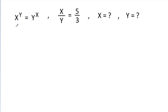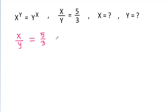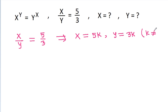In this video we have given x power y is equal to y power x, and x by y is equal to 5 by 3. We have to find the value of x and y. Since x by y is equal to 5 by 3, if x is equal to 5k then y will be equal to 3k, where k is not equal to 0.